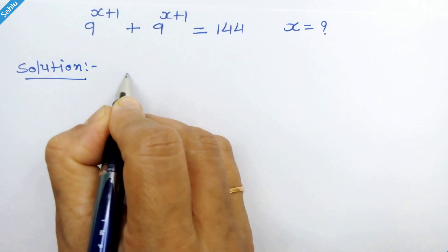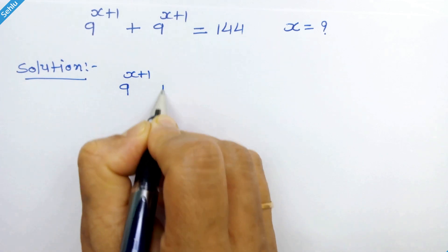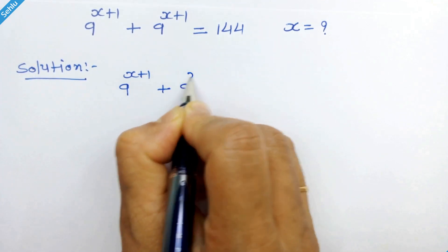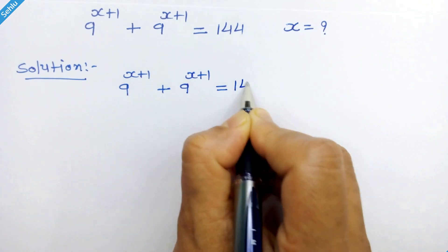So our question is 9 raised to x plus 1 plus 9 raised to x plus 1 is equal to 144.